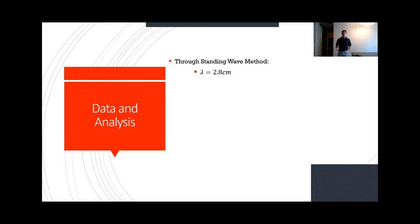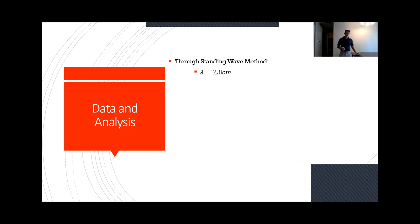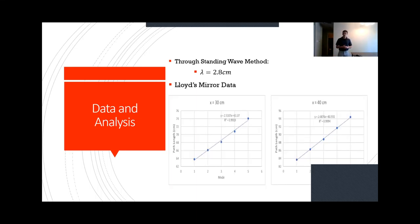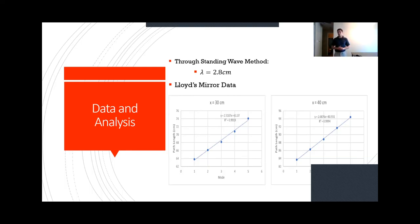While doing this through the standing wave method, we got a lambda of 2.8 centimeters, which matched very well with the 2.84 centimeters from the manufacturer's pamphlet. So we knew our equipment was working correctly and we had a good basis for what lambda is. For the Lloyd's mirror data, we did measurements at both x equals 30 centimeters and x equals 40 centimeters to get more concrete data. The r-squared values for both fits were very close to one, at 0.99, showing a good fit for the data.